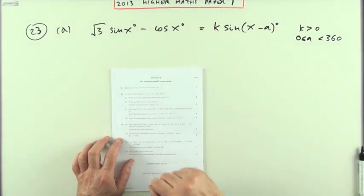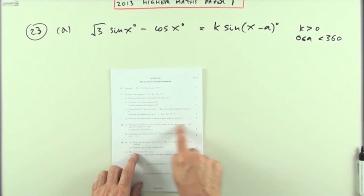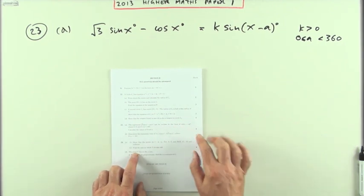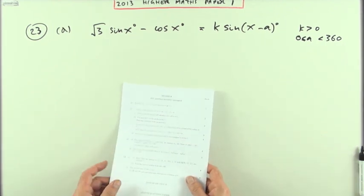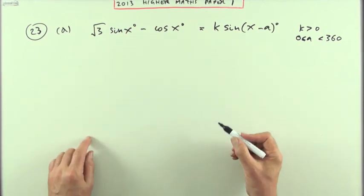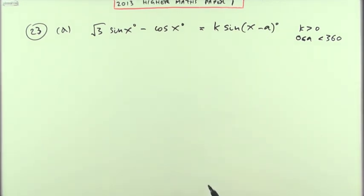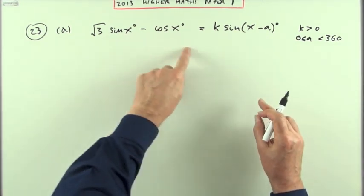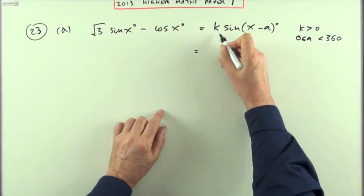Number 23 from paper one of the 2013 Higher Maths. Here's the wave function, and it's in paper one so there'll be none of that messing about with a calculator. What have we got? If it's to be written in this form, then I'm going to expand this and compare the corresponding terms.